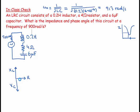The resultant of XL minus XC gives us a net vertical component, and the overall impedance Z is the vector sum of that component and the resistance. The phase angle is the angle between the resistance direction and the resultant impedance direction.